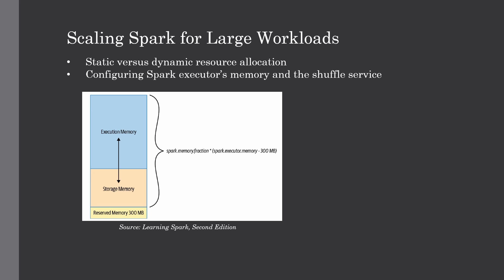To avoid job failures due to resource starvation or gradual performance degradation, there are some Spark configurations we can enable or alter to help these jobs succeed. These configurations affect three Spark components: the Spark driver, the executor, and the shuffle service running on the executors. The Spark driver's responsibility is to coordinate with the cluster manager for launching executors in your cluster and scheduling Spark tasks on them. Some optimization insights have been derived from big data companies like Facebook, which uses Spark at terabyte scale.